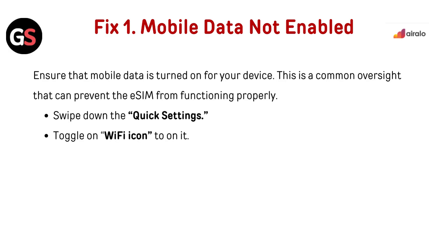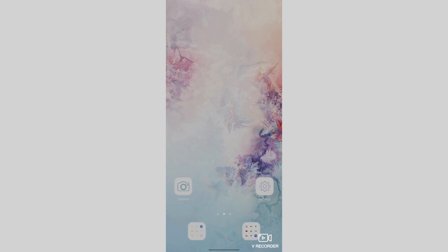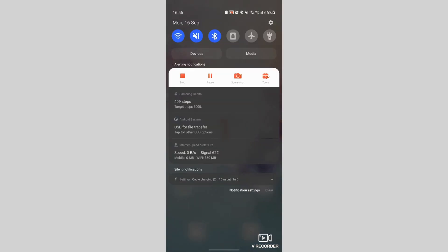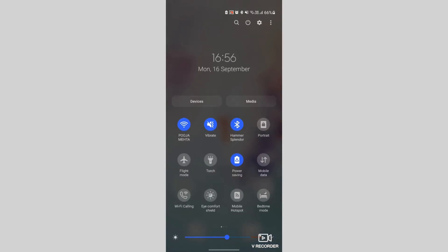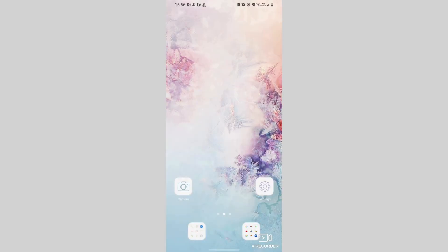Fix 1: Mobile data not enabled. Ensure that mobile data is turned on for your device. This is a common oversight that can prevent the eSIM from functioning properly. Swipe down the quick settings and toggle on the mobile data icon.